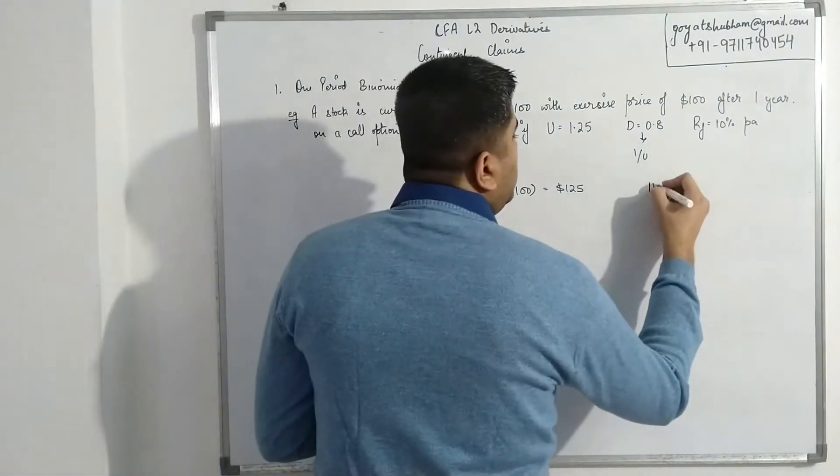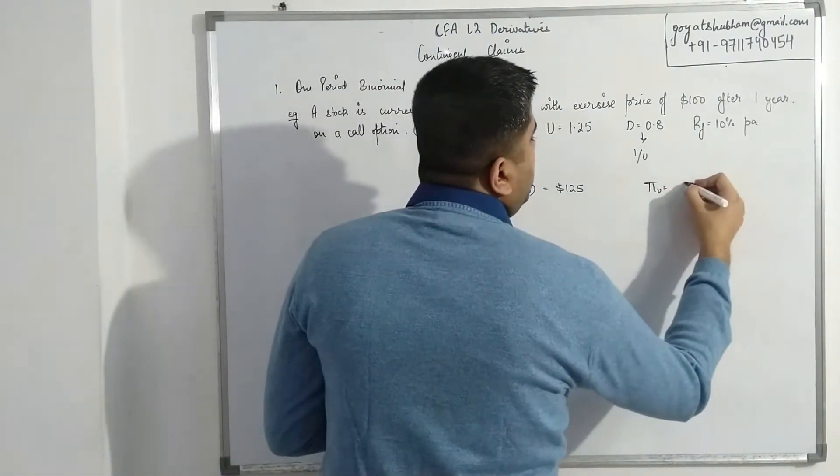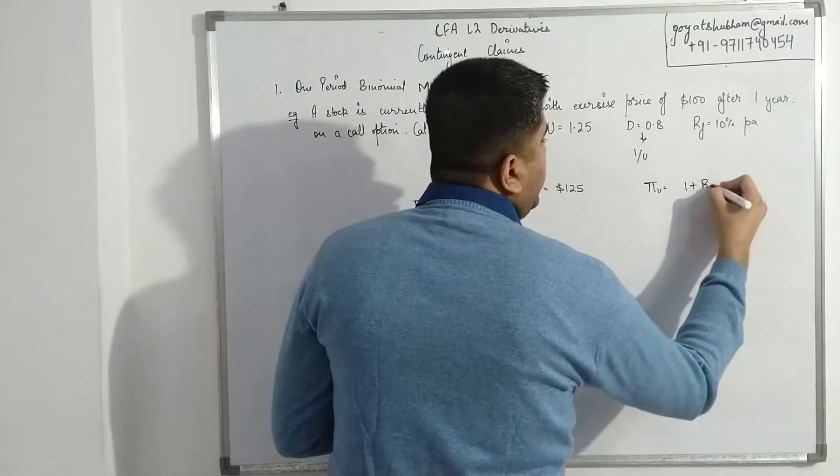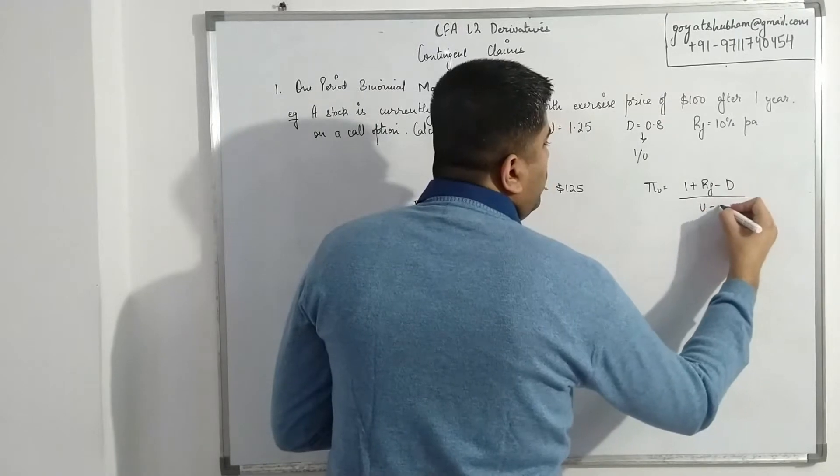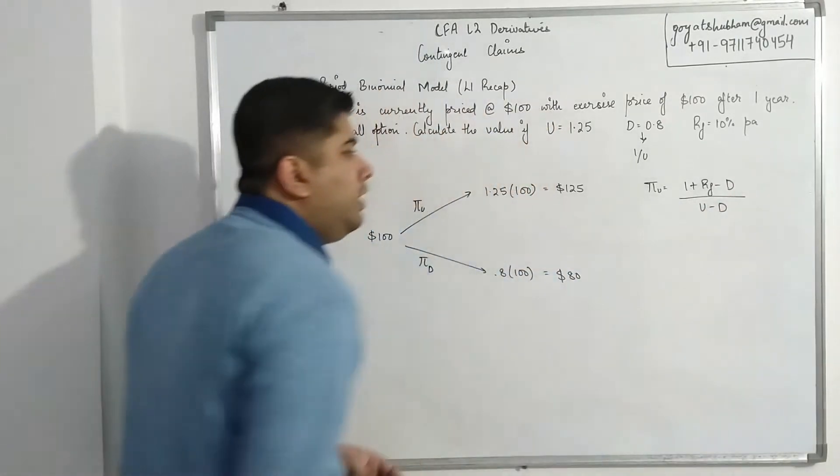The formula for probability of up move is given as 1 plus risk-free rate minus size of down move, divided by up move minus size of down move.